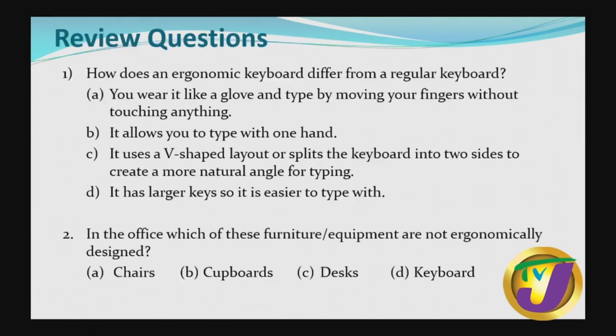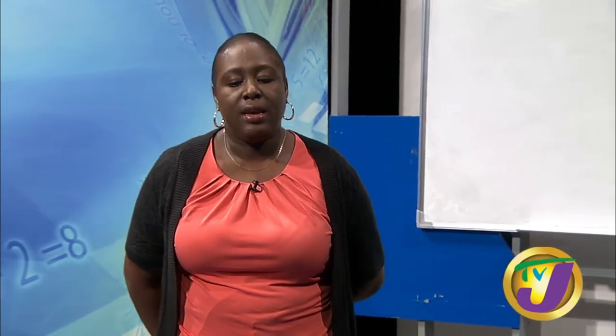Review question: how does an ergonomic keyboard differ from a regular keyboard? Options: A — you wear it like a glove and type by moving your fingers without touching anything; B — it allows you to type with one hand; C — it is a V-shaped layout or splits the keyboard into two sides to create a more natural angle for typing; D — it has larger keys so it is easier to type. The answer is C.